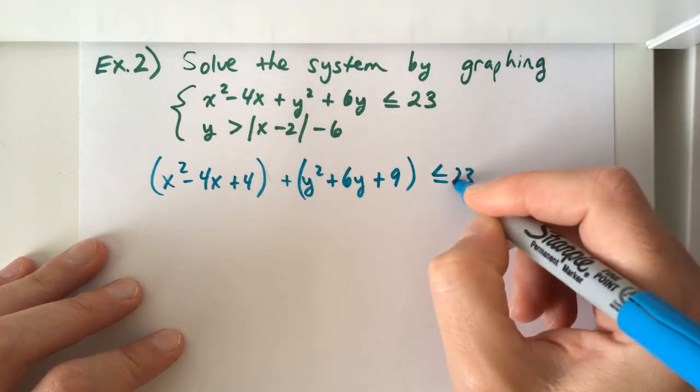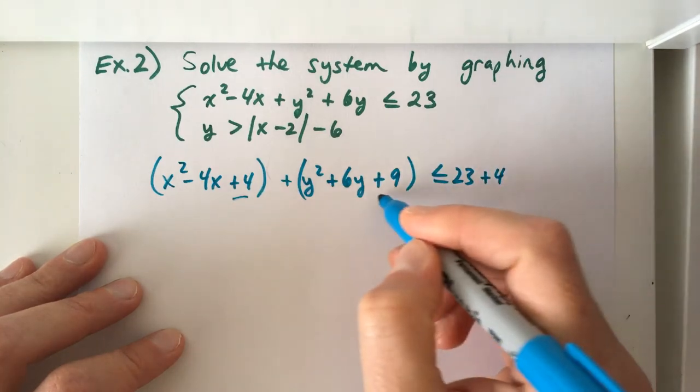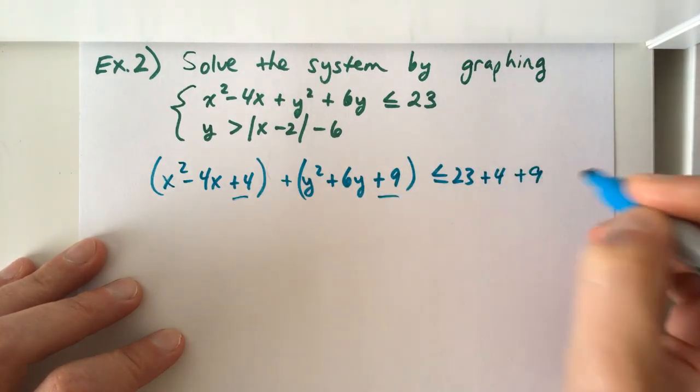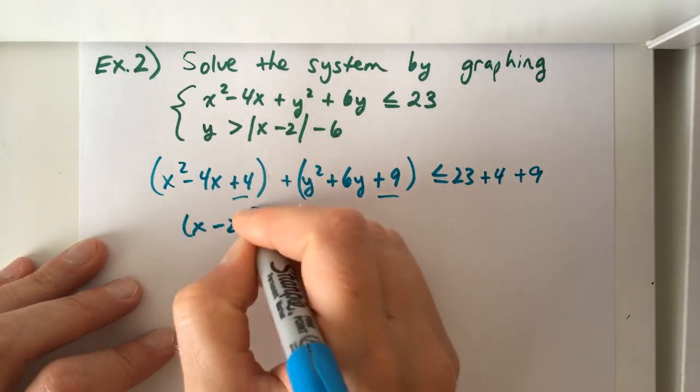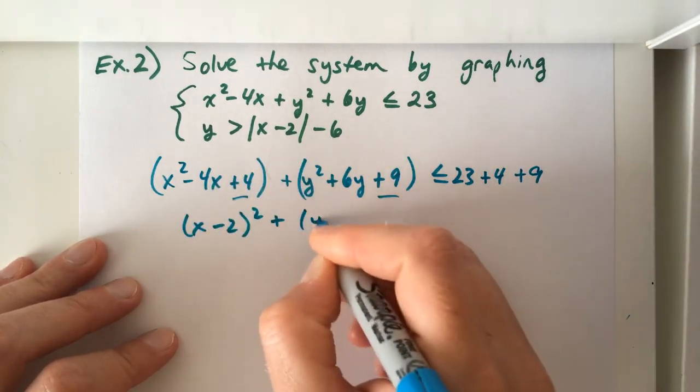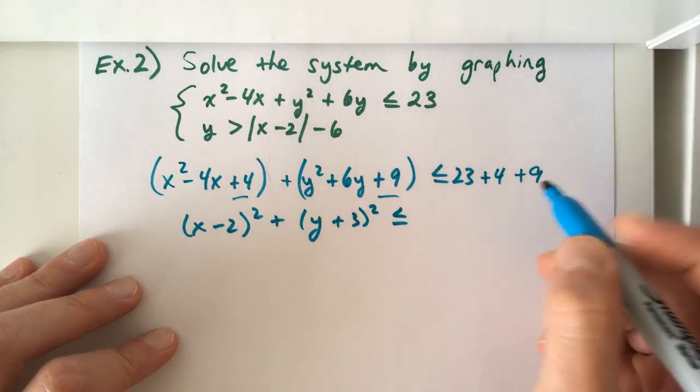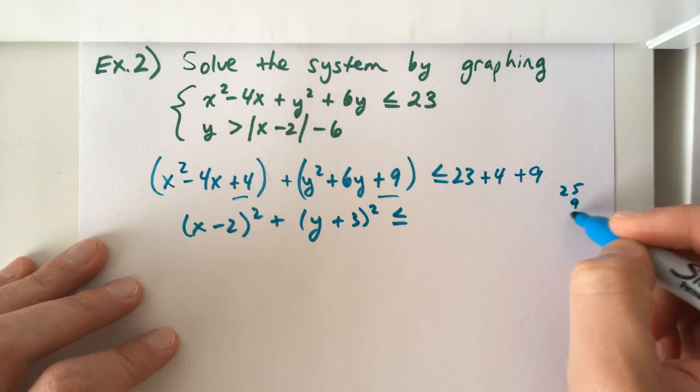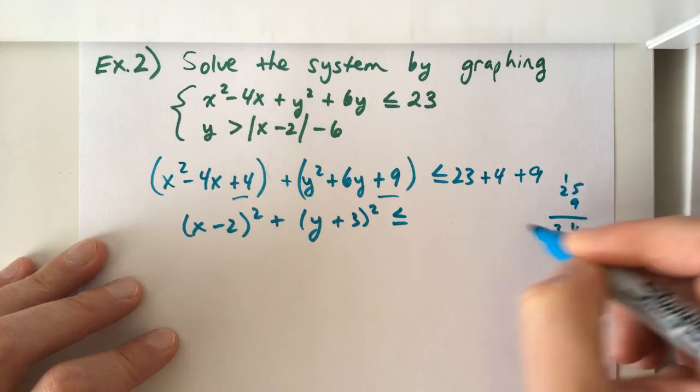On the right-hand side, we have 23. And we also added 4, so we're going to have to add 4. And we added 9, so we're going to have to add 9. Now we can factor. This is x minus 2 squared plus y plus 3 squared is less than or equal to 25 plus 9. That would be 34.